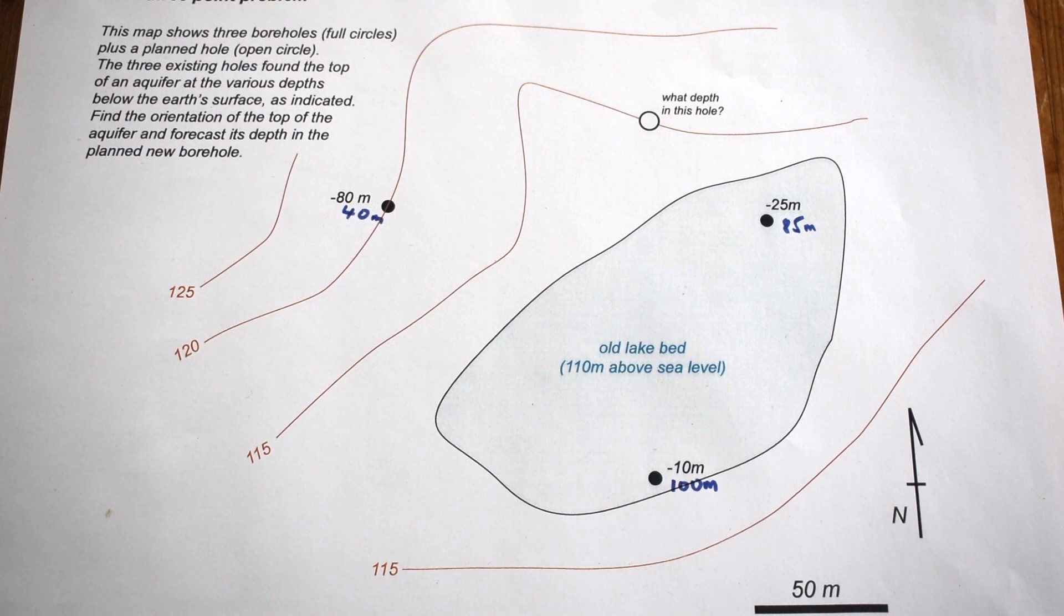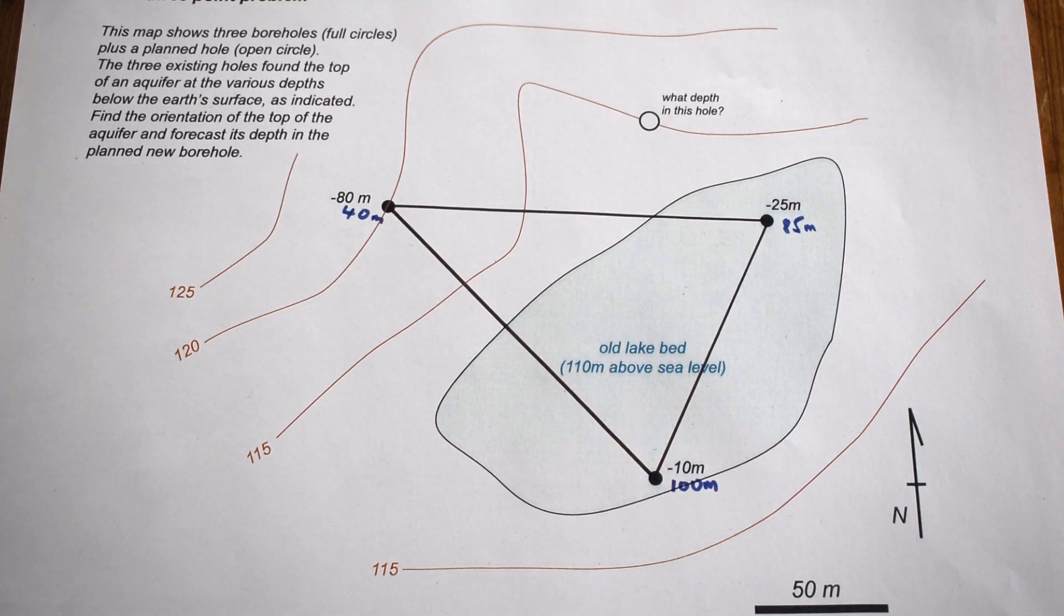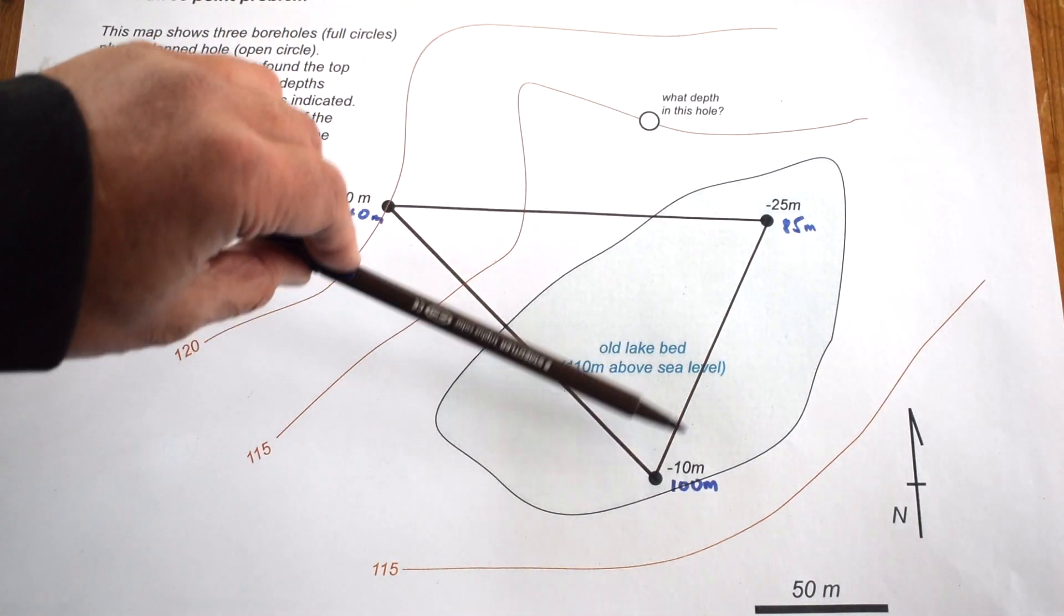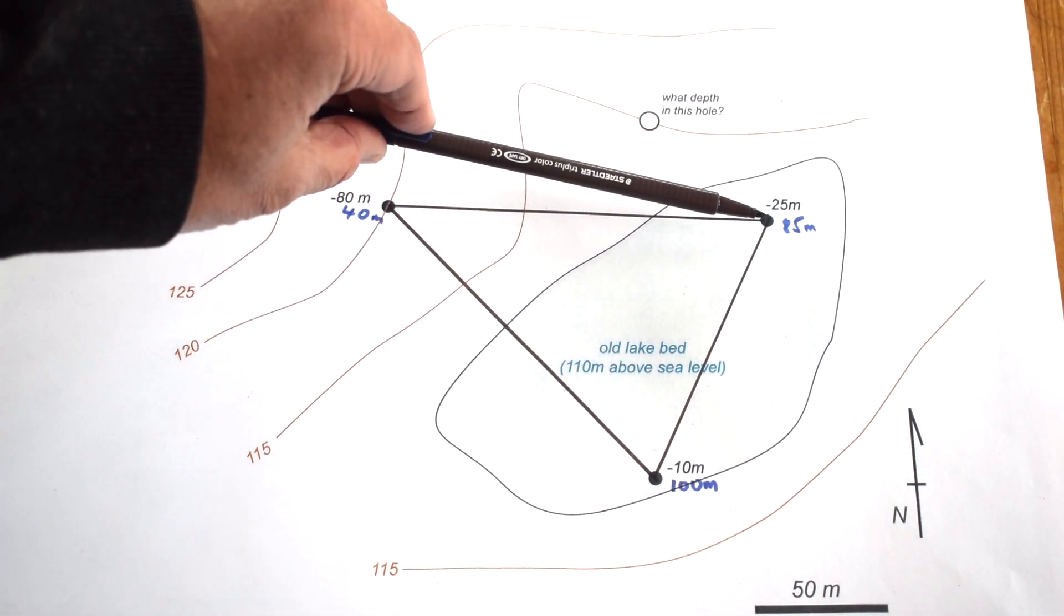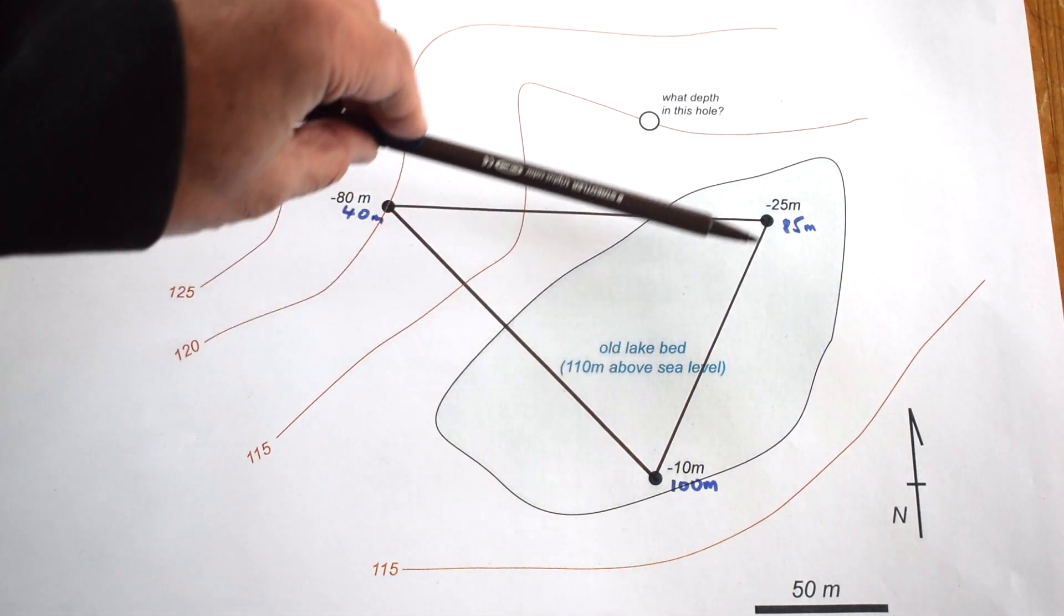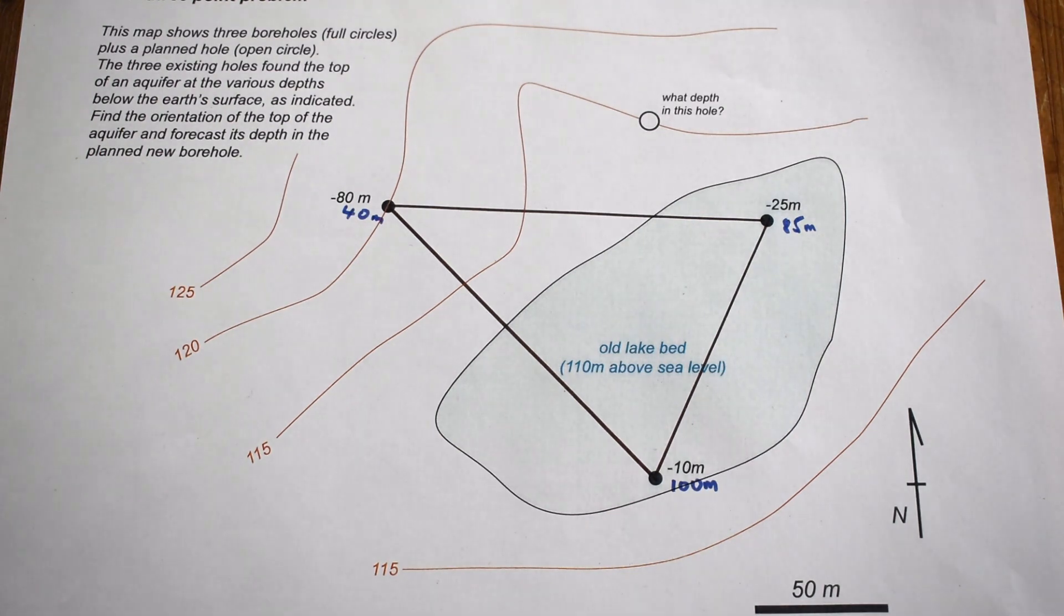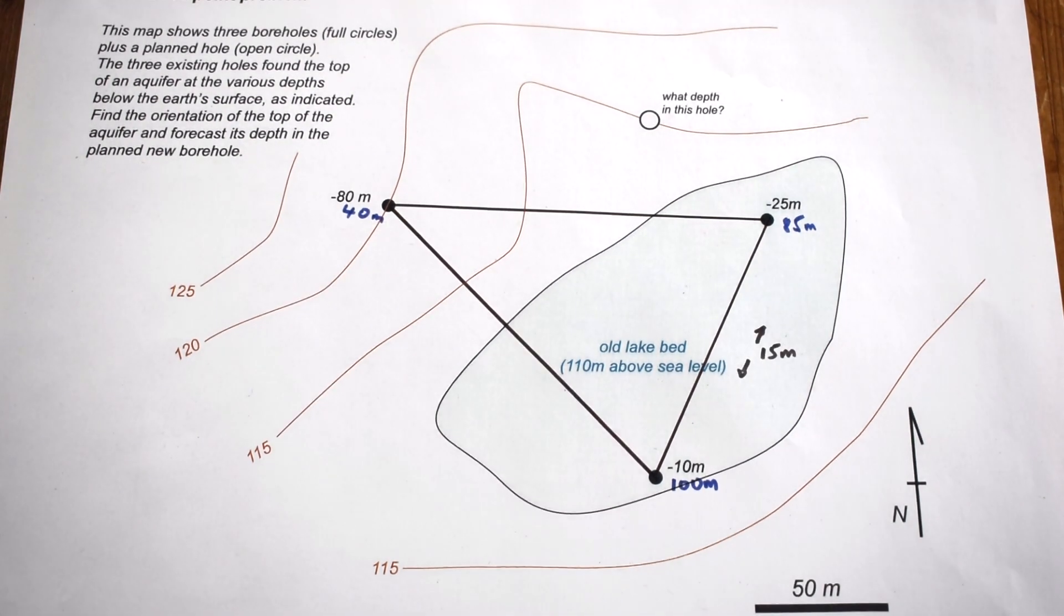Now we need to create the three-point triangle by joining up those three boreholes like this. Let's calculate the change in elevation of our aquifer along each side of our triangle. The difference between 85 meters and 100 meters is 15 meters, so there's an elevation change of 15 meters in this direction along this side of our triangle. Let's do the same for the other two sides.